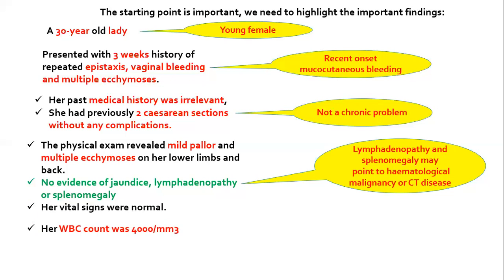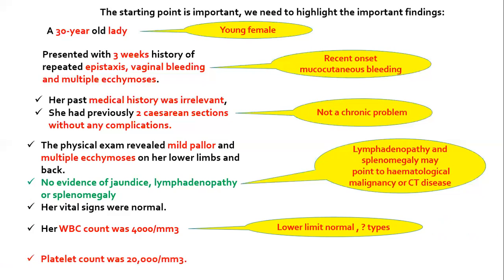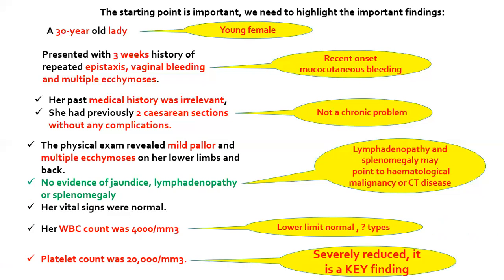The white blood cell count was 4,000 with no differential count or blood film available. It appears to be on the lower limit of normal, since the normal range is 4,000 to 11,000. The platelet count was 20,000 — severely reduced — and this is the key finding from which we can proceed with the differential diagnosis.